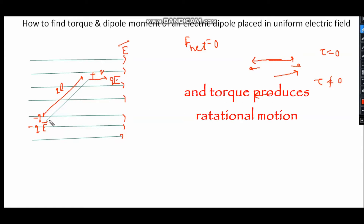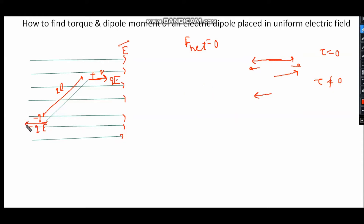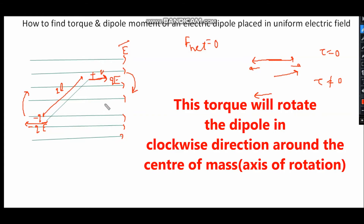Here also we have one line of action of the force here and the other line of action of force here. So there is a torque acting on the dipole and the direction is clockwise — on the negative q charge the direction is like this, and on the positive q charge the direction is like this. So torque is acting in the clockwise direction.